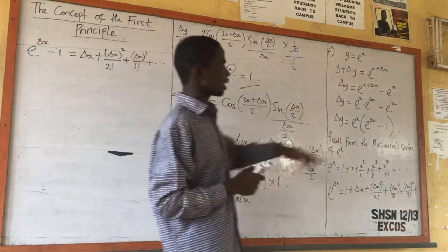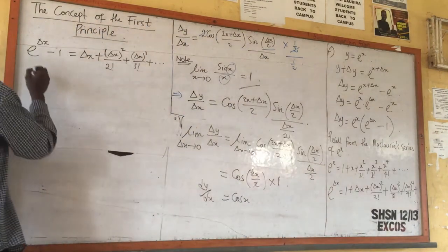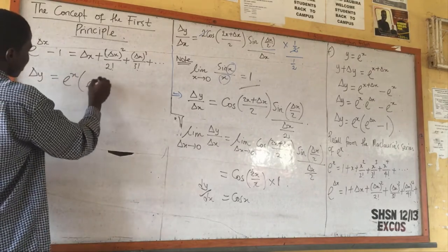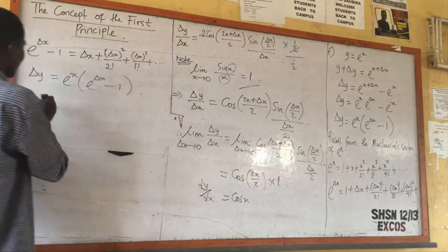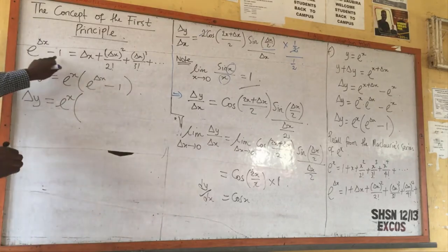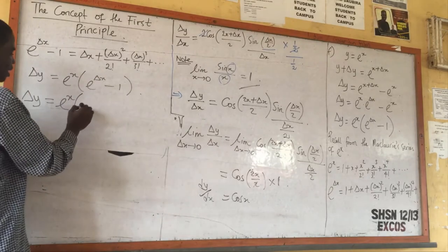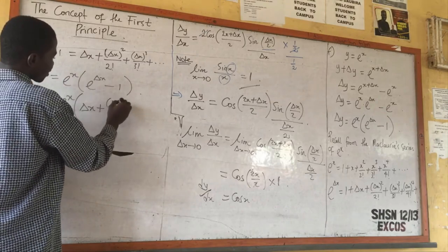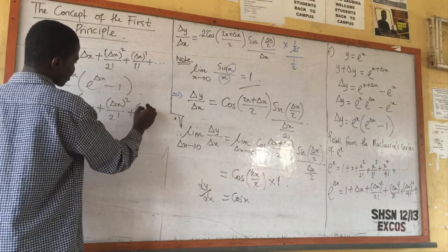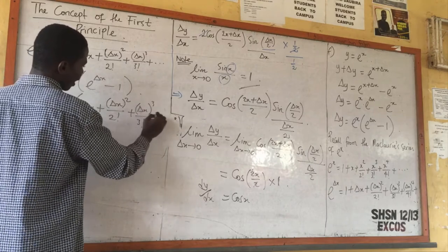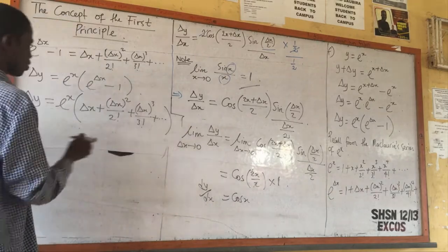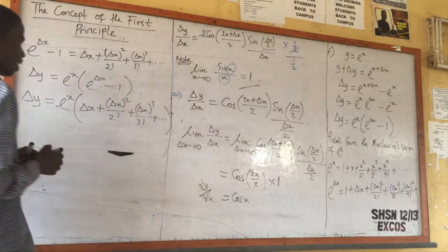Now I put it inside this expression. I have delta y which is equal to e raised power s, open bracket, e raised power delta s minus 1. Substituting, delta y will now be e raised power s times delta s plus delta s squared over 2 factorial plus delta s cubed over 3 factorial, and it goes on like that.